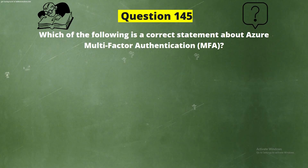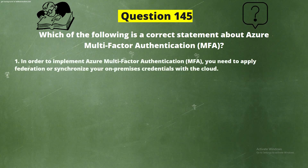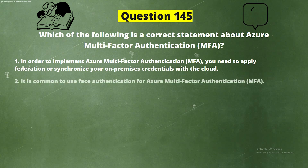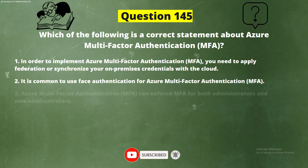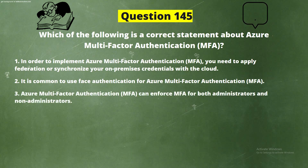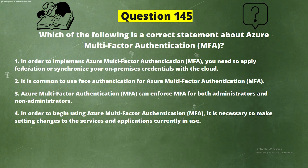Question 145. Which of the following is a correct statement about Azure Multi-Factor Authentication (MFA)? Option 1: To implement Azure MFA, you need to apply federation or synchronize your on-premises credentials with the cloud. Option 2: It is common to use face authentication for Azure MFA. Option 3: In order to begin using Azure MFA, it is necessary to make setting changes to the services and applications currently in use.